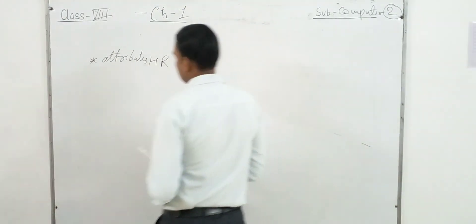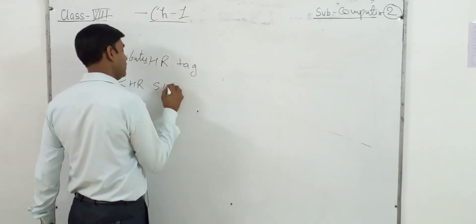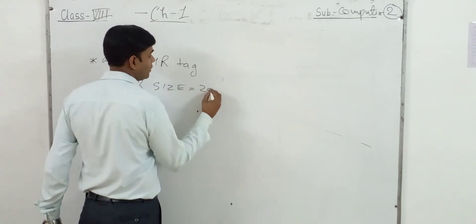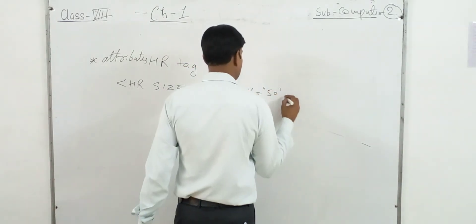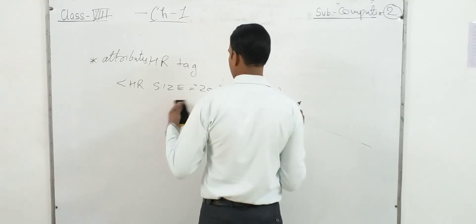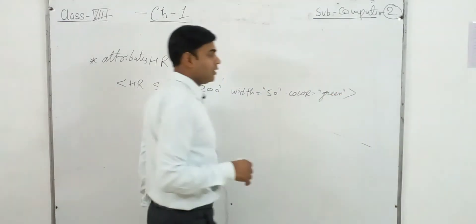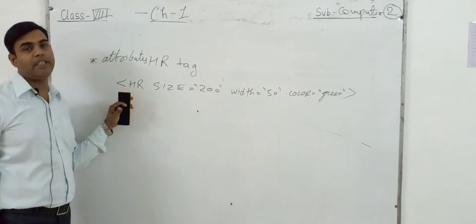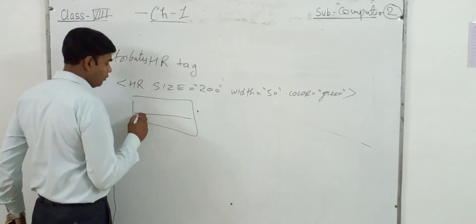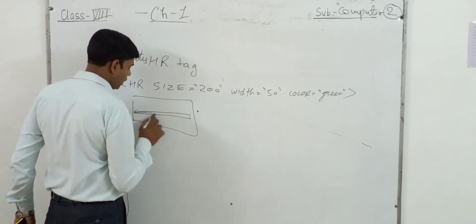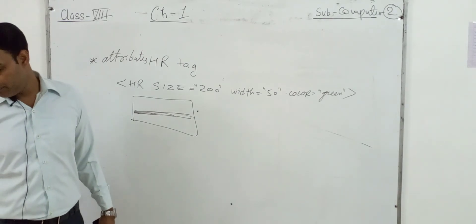Let's take an example and see the effect. We will use HR tag with size set to 200 pixels, width set to 50, and color set to green. Because it is an empty element, we do not close it. The output will show a line with the specified width of 50, and the color will be green. This is the use of HR and BR elements.